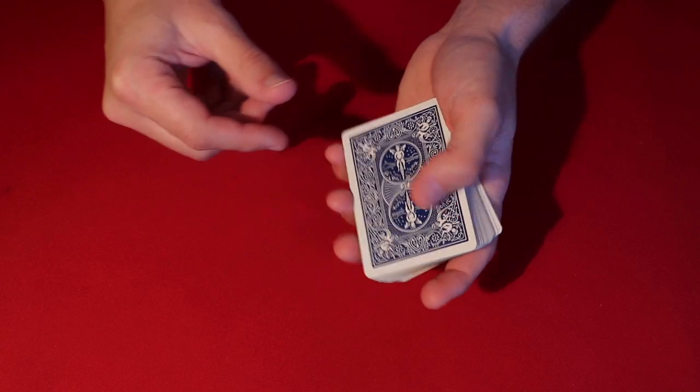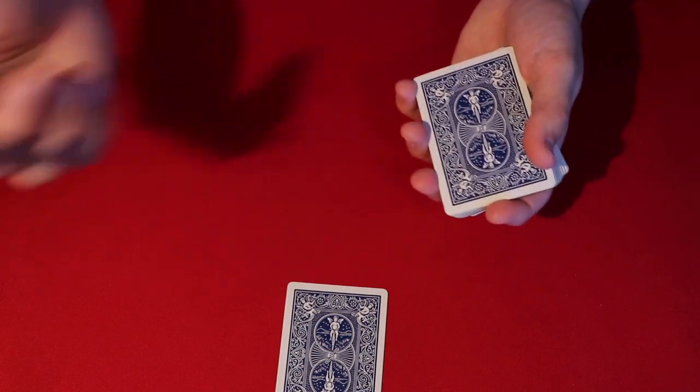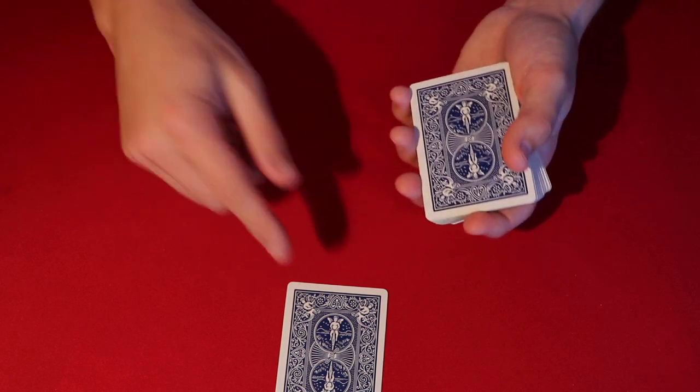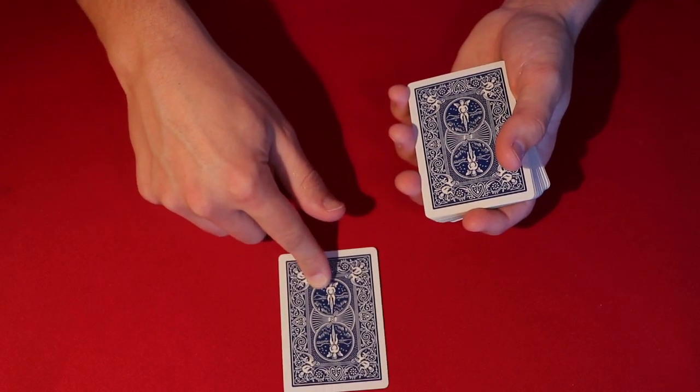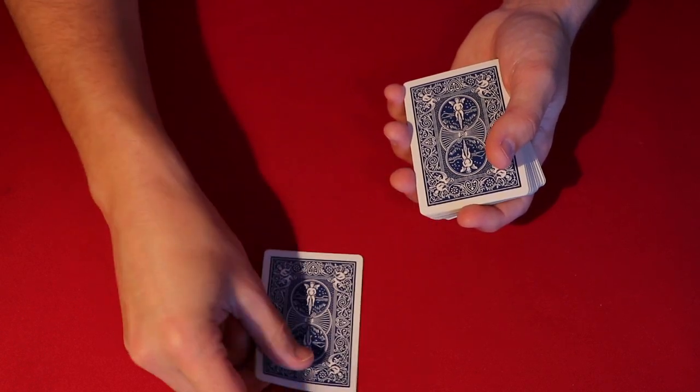It wasn't the Ten of Clubs. Because what I just did there was a double lift. I'll leave a link on the screen for that. I just lifted over two cards. And now the top card that I put down on the table, this is actually the spectators Six of Clubs.